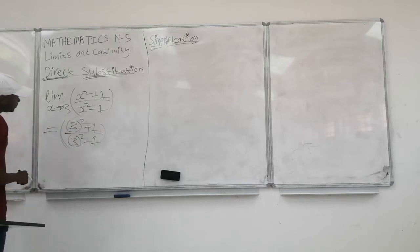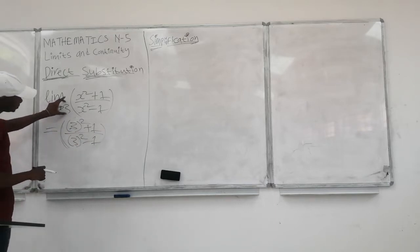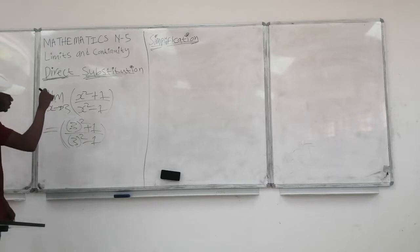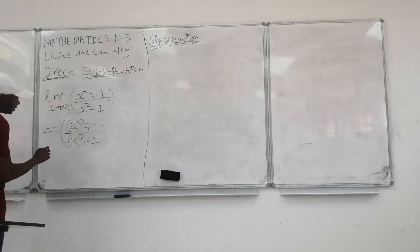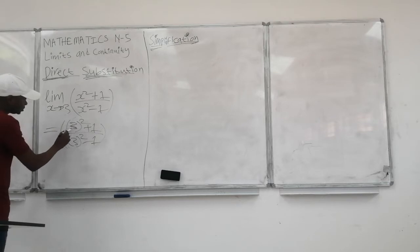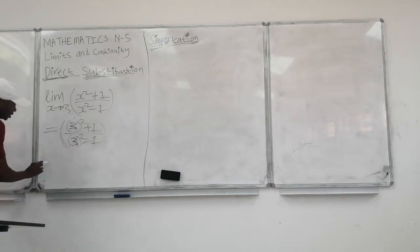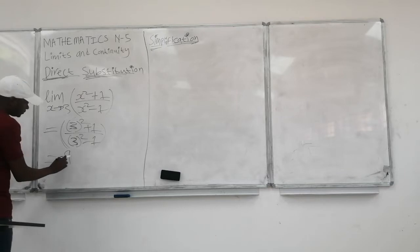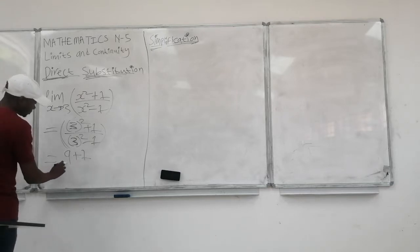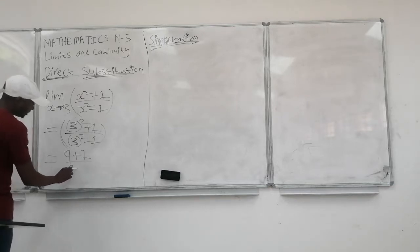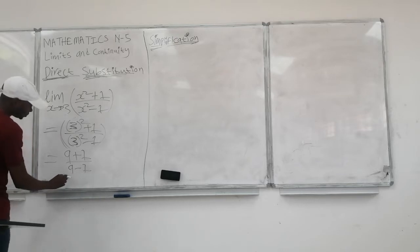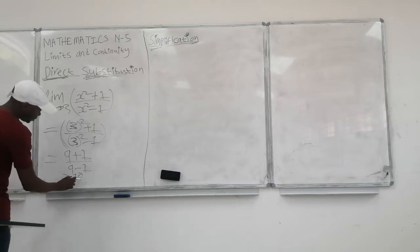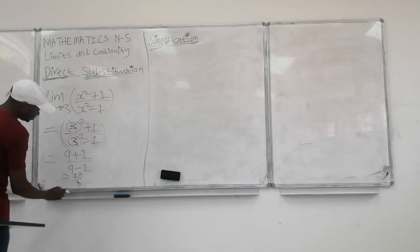Simply because we are replacing or substituting 3 for x. This gives us 9 plus 1, all over 9 minus 1. So our final answer is going to be 10 over 8.